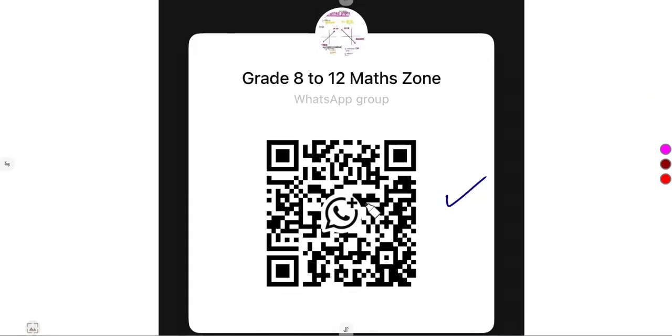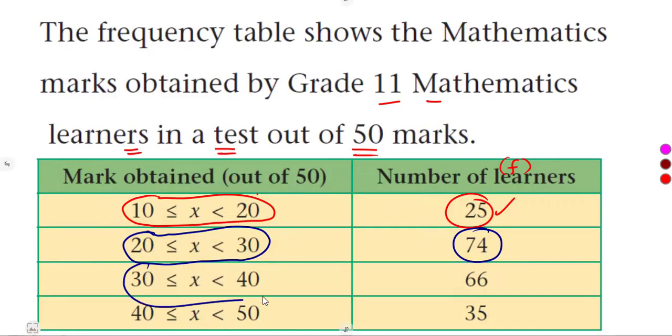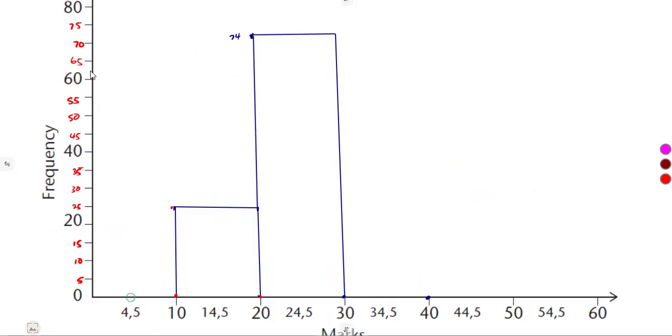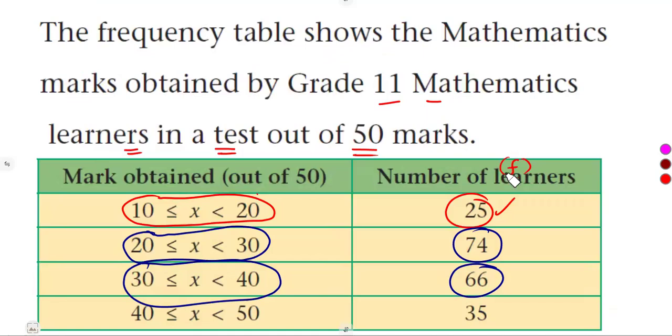The other part that we are given is 30 to 40 versus 66. That is 30 to 40 and 66 just above 65. 66, let's just say approximately somewhere there. Or let's take the 40. First, 40 going up. 66 is going to be approximately somewhere there. Then let's join these two. That is from 30 to 40. And the corresponding value was 66.